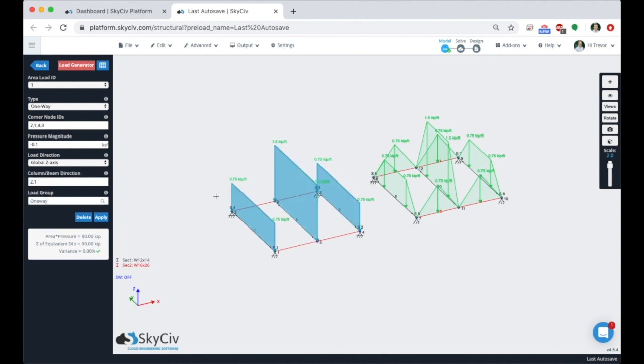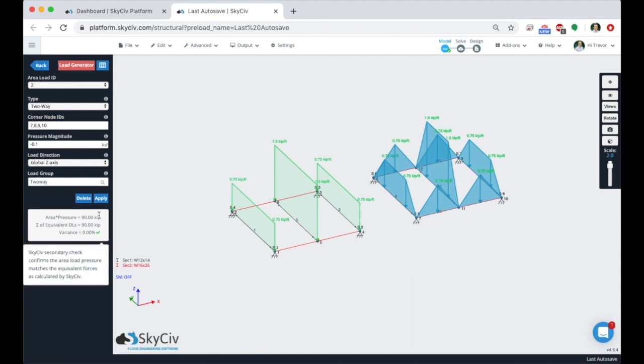So if we click on one of the loads here using the SkySiv load verification system, we're seeing that the area times the pressure is 90 kips and that our sum of the equivalent distributed loads is 90 kips and we have 0% variance, that's good.